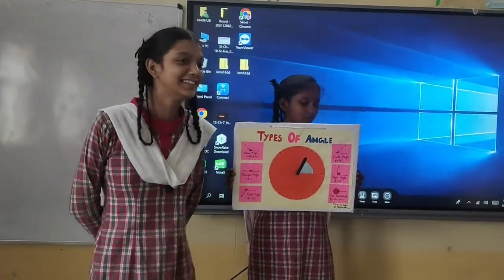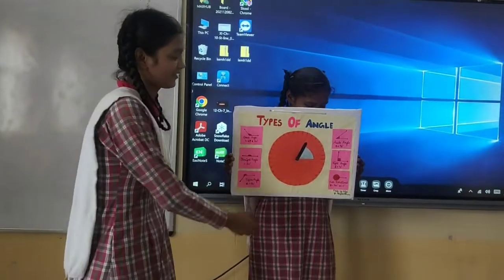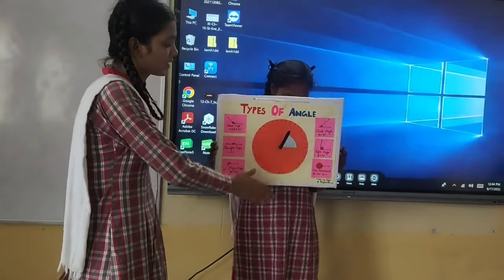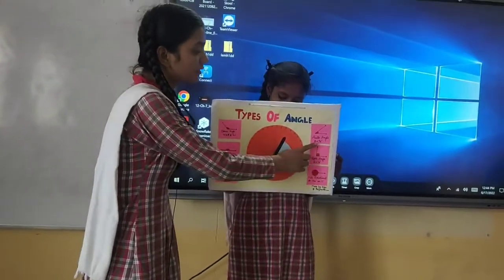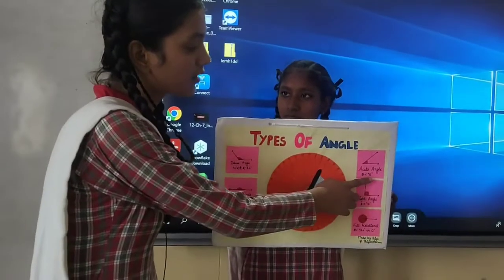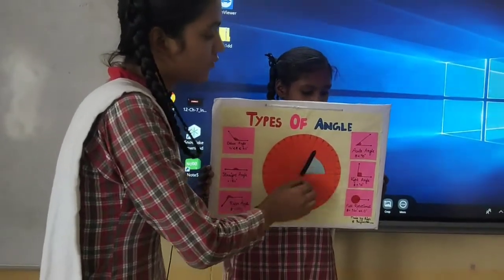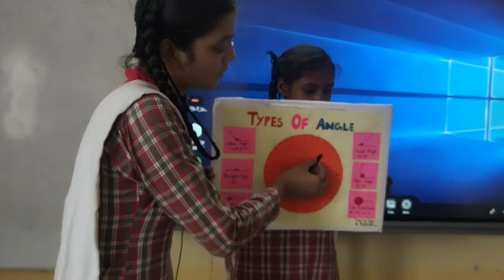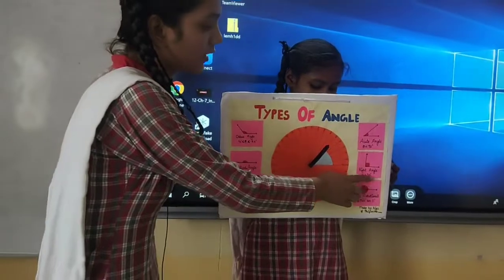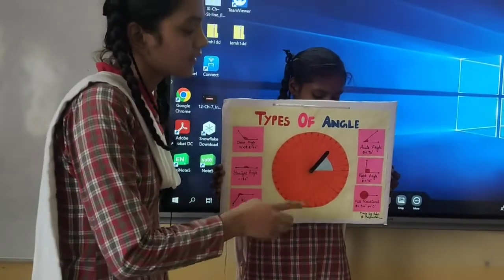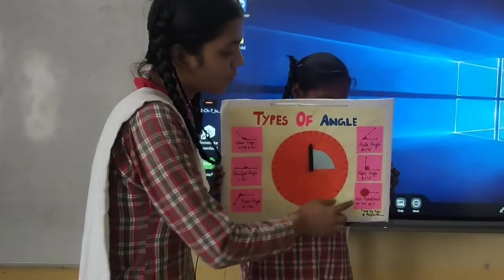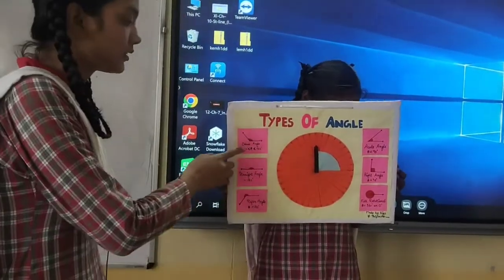Miss Arithi here. Hello friends. Today I will tell you about the types of angles. There are a total of 6 types of angles. First: acute angle — the angle which is greater than zero degrees and less than 90 degrees. Second: right angle — the angle which has exactly 90 degrees.